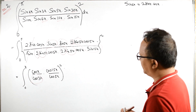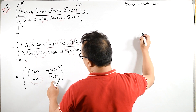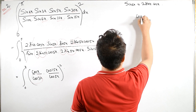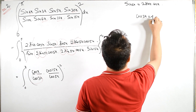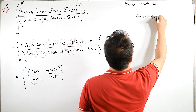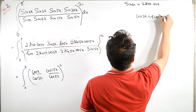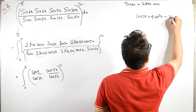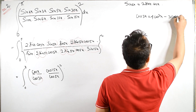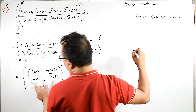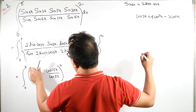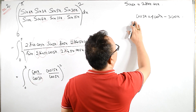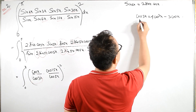So cos 3x equals 4 cos³x minus 3 cos x. I want cos 3x upon cos x, so if I divide cos x on both sides...